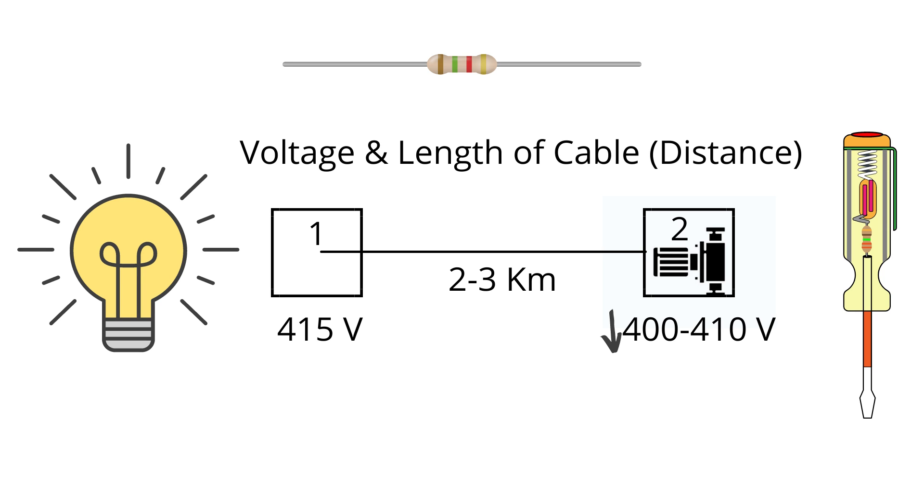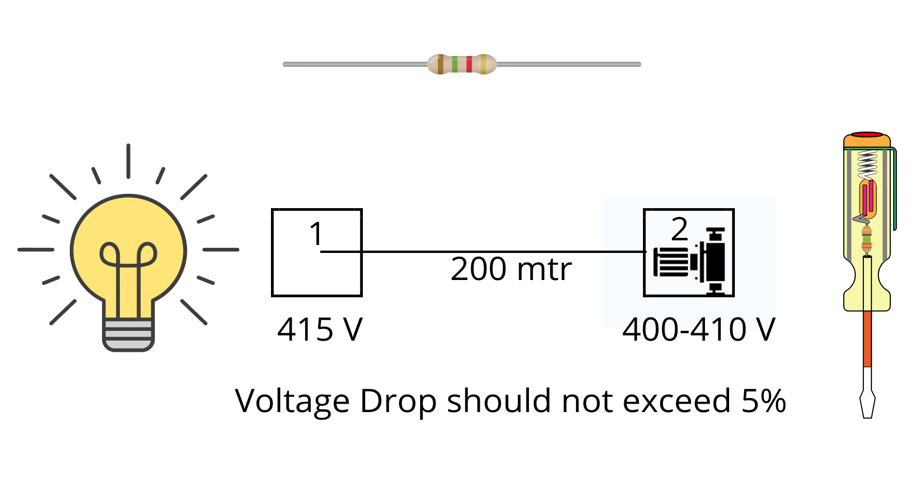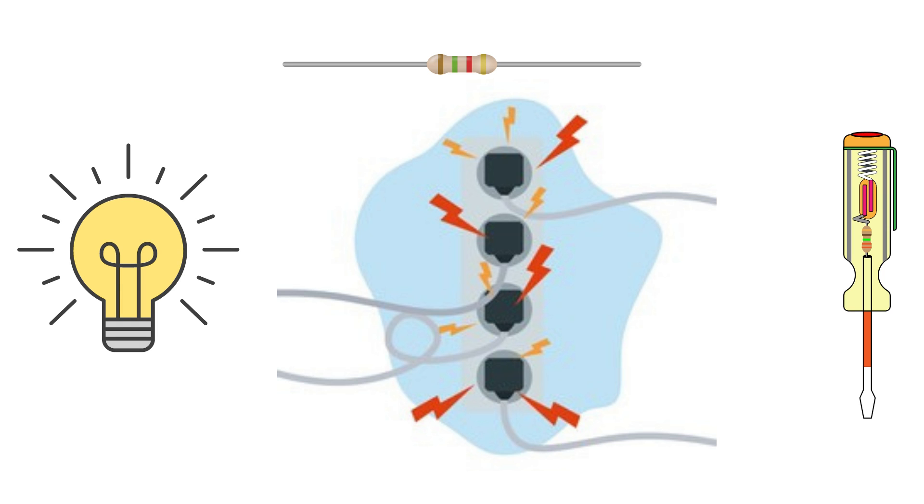To prevent this huge loss in voltage, we can increase the supply voltage from 415 volts to 11 kV. An important point to note here is that in any electrical system, drop in voltage cannot be greater than 5%, or else that system would be deemed inefficient.